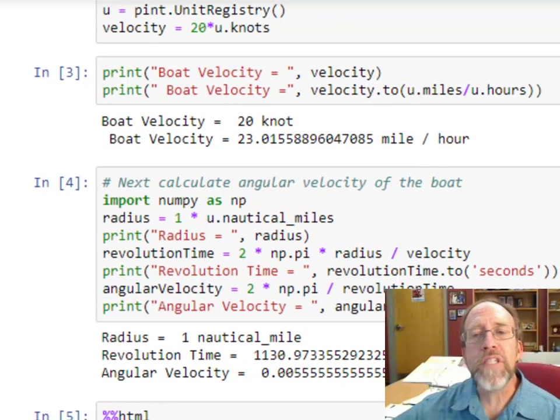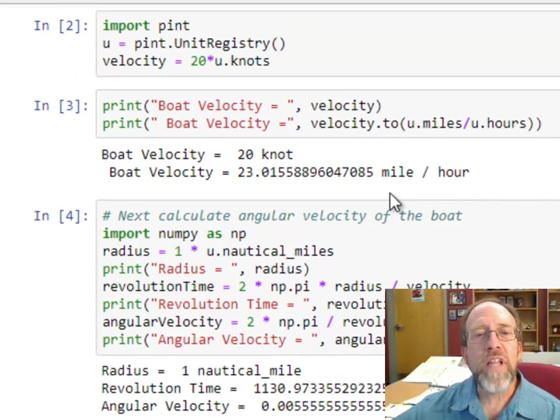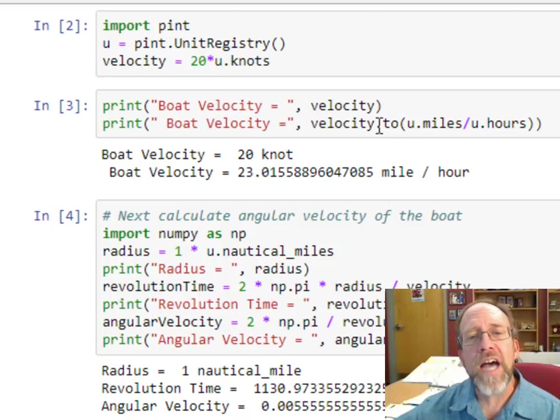My velocity of my boat is 20 knots. Now that I've set up this velocity to have units, I can print this out. The boat velocity is equal to velocity, which prints out now as 20 knot. And look what I can do here. Velocity dot 2, U miles over U hours. So it will do the unit conversion to convert the knots into miles per hour. And that's just built in.